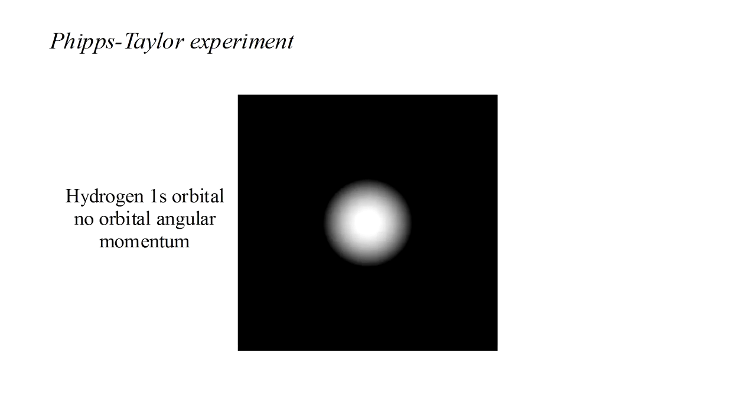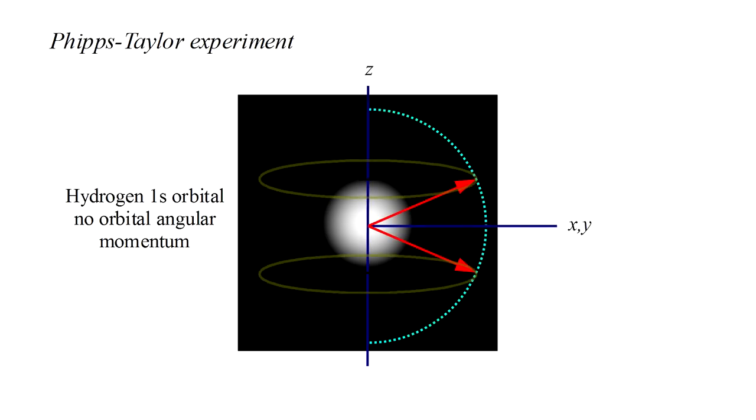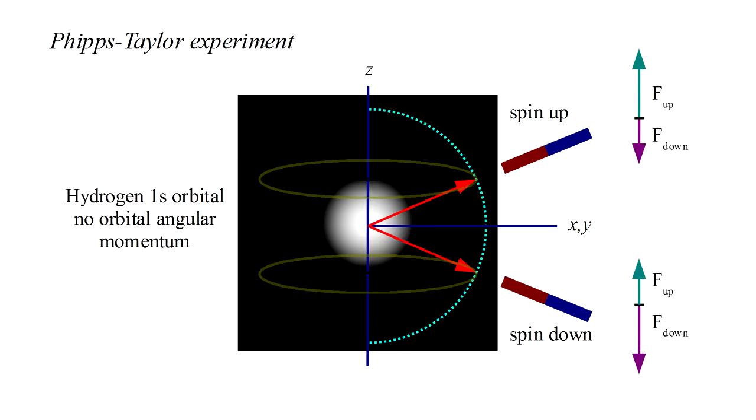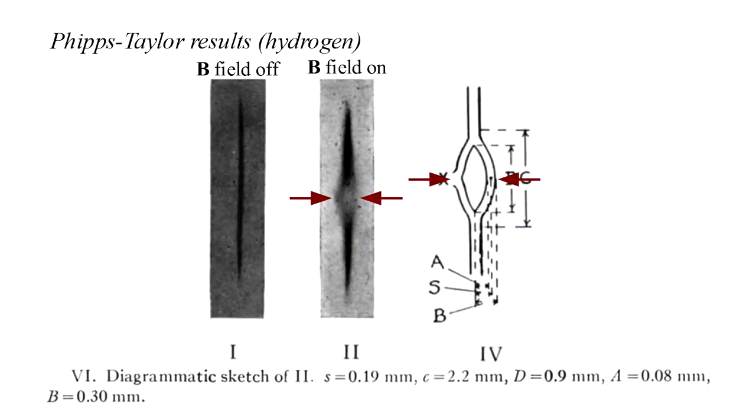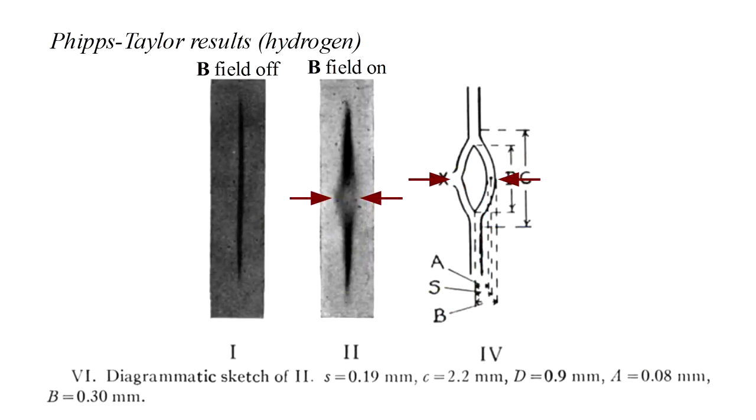Finally, let's consider the Phipps-Taylor and Stern-Gerlach experiments, in which beams of neutral atoms are split into two by a non-uniform magnetic field. In its ground state, the 1s orbital, the hydrogen electron has no orbital angular momentum, but it does have spin angular momentum, which can take on two orientations. The resulting two orientations of the spin magnetic dipole mean that a beam of hydrogen atoms will split into two in the presence of a non-uniform magnetic field.